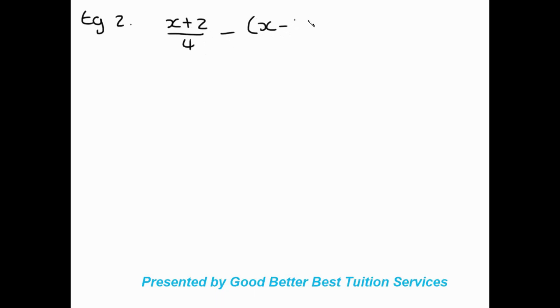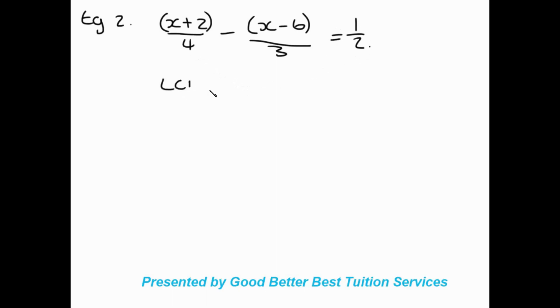Let's look at example number two. Here we get x plus 2 over 4, minus x minus 6 over 3, equal to a half. They've given us a hint: whenever you see two terms as the numerator, put them in brackets — that helps us keep track of signs so we don't make mistakes. The denominators are 4, 3, and 2, so our LCM is again 12.